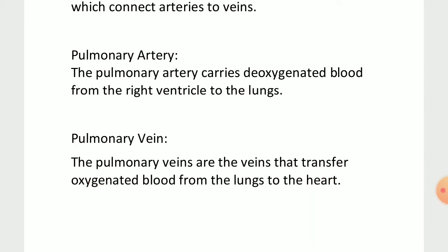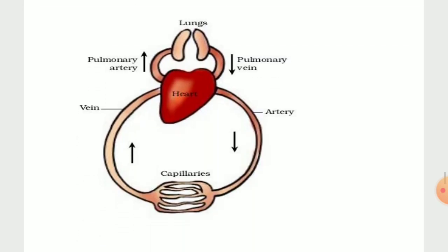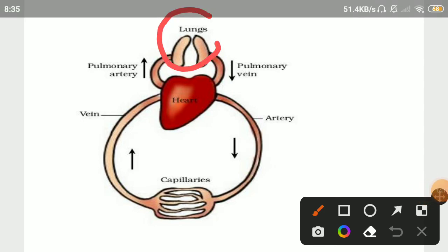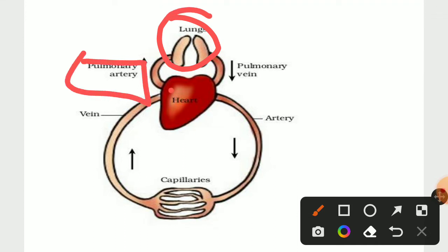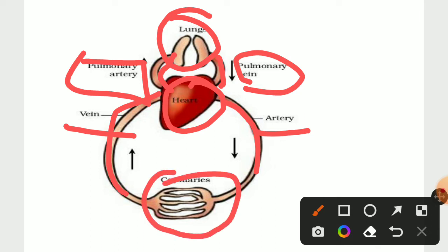Now we will see the blood circulatory image. The top image shows the lungs. This pathway is the pulmonary artery, and this is the pulmonary vein. This is our heart, which distributes blood to other parts. This way is the artery, this is the vein, and these are the capillaries which connect artery and vein.